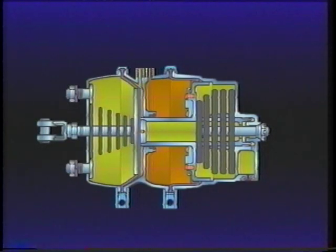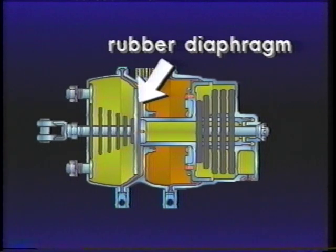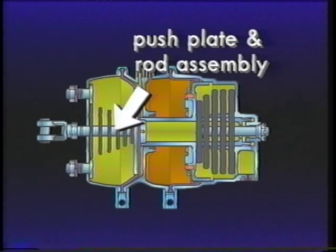The service chamber has a pressure plate and a non-pressure plate with a rubber diaphragm between them. The return spring in the chamber holds the push plate and rod assembly against the non-pressure side of the diaphragm.